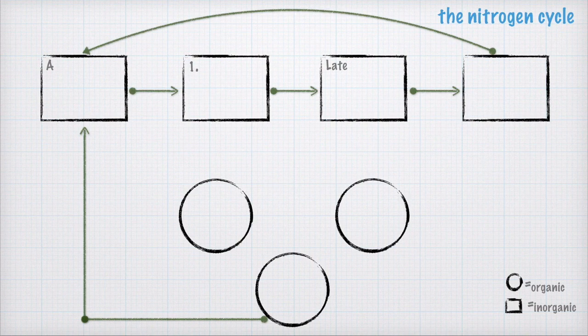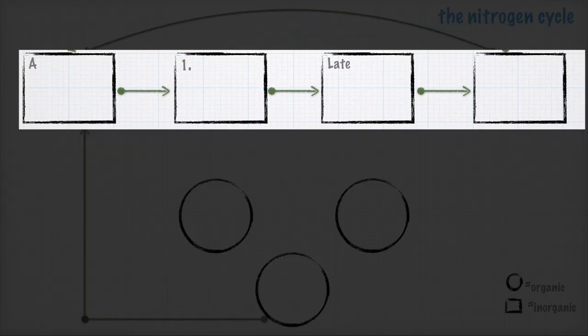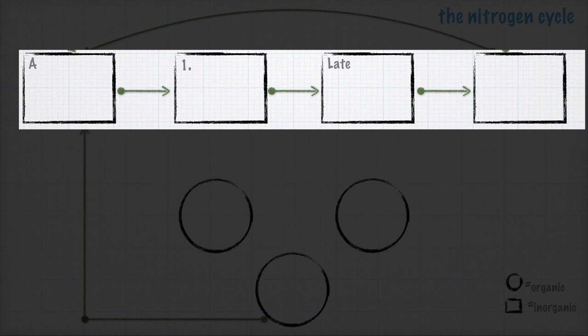As you're listening, go ahead and write some of this stuff down — actually all of it down. Start with four boxes, and in each of the boxes going from left to right, put the letter A in the top left corner, then 1 in the second box, then 'late,' then leave the other one blank. These are the inorganic compounds used in the nitrogen cycle. A, 1, and 'late' remind me of a moving company called A1 that was notoriously late — that's why I put A1 late.